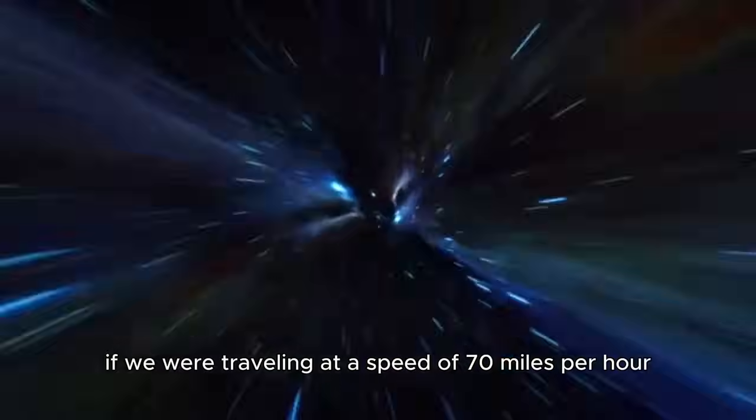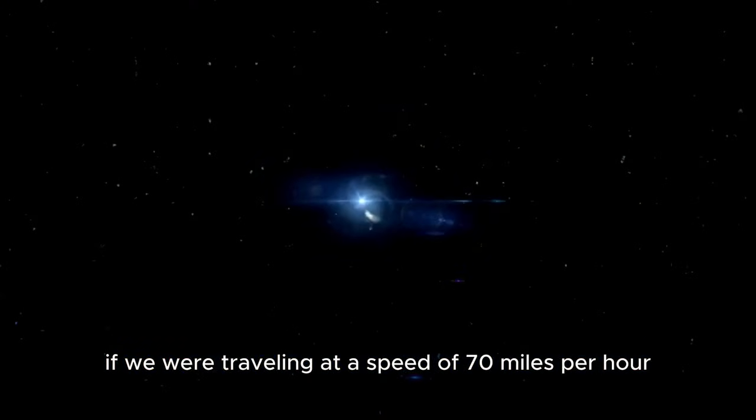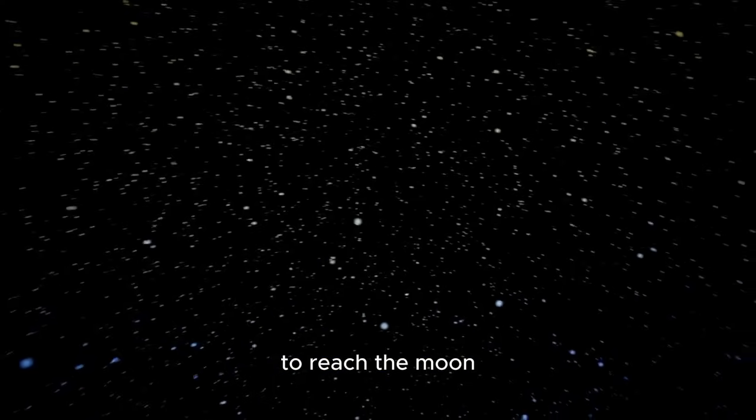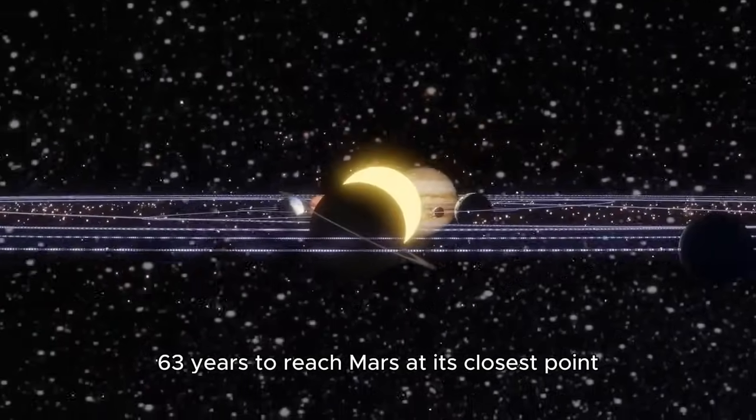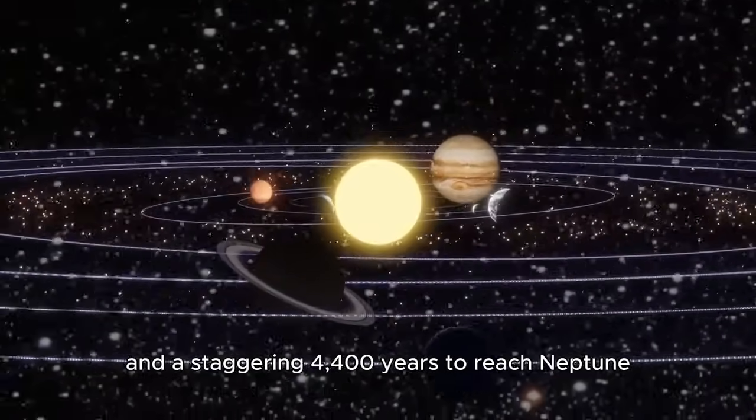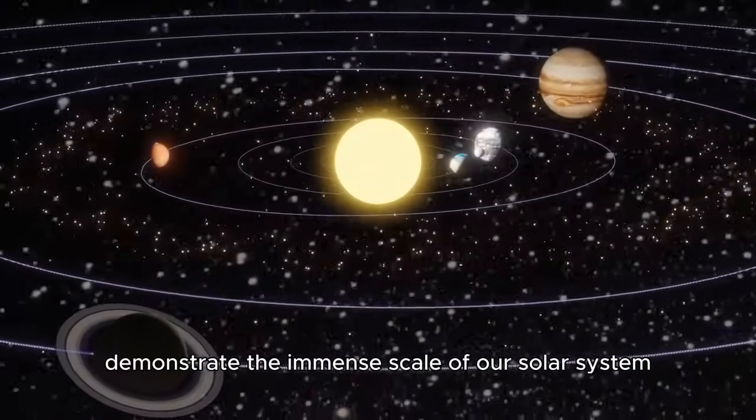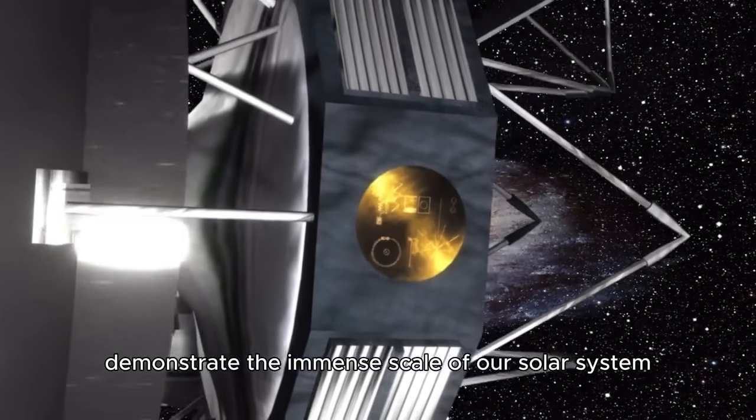If we were traveling at a speed of 70 miles per hour, it would take us about 15 days to complete one lap around the Earth's equator. It would take approximately 5 months to reach the Moon, 63 years to reach Mars at its closest point, and a staggering 4,400 years to reach Neptune.